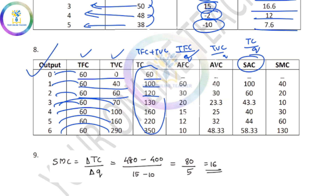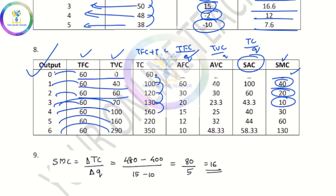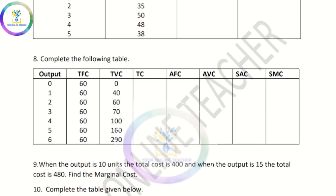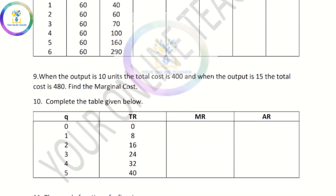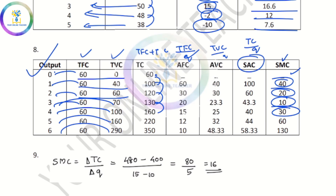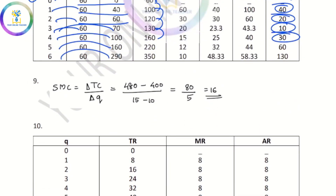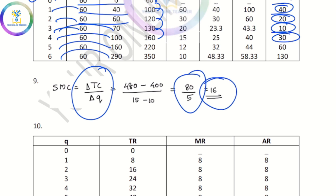AFC, SMC — M is marginal cost. Total cost: 100 minus 60 is 40, 120 minus 100 is 20, 130 minus 120 is 10, 160 minus 130 is 30. Marginal cost: delta TC by delta Q, which is the change in total cost divided by quantity. 480 minus 400 is 80, and 80 by 5 is 16.